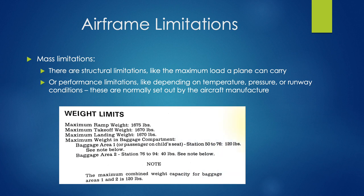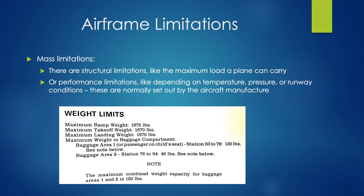Each aircraft has a structural or mass limitation — the maximum payload it can carry and still be safe to fly. This weight is displayed on a placard and will give us the maximum ramp weight before taxiing, a maximum take-off weight, and a maximum landing weight. We may also have performance limitations such as operating temperatures, particular pressures, or runway conditions. If these change, that may affect performance, and we need to be aware to make sure we still have enough performance to carry out the task at hand. Abiding by these limitations prevents the aircraft from operating outside its structural or performance envelope.